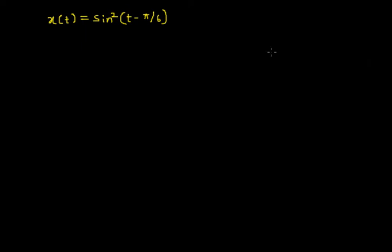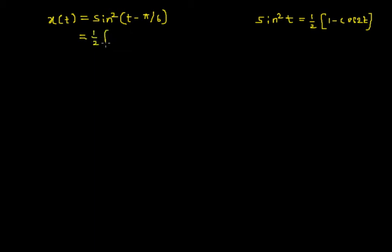To begin with, the signal is sin square of t minus pi by 6. I need to expand this. I already know that sin square of t is equal to 1 by 2 into bracket 1 minus cosine of 2t. Using that result I can expand this as 1 by 2 into bracket 1 minus cosine of 2t minus 2 pi by 6, which I get as pi by 3.